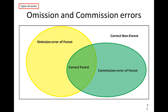From this example, we can draw principles for an arbitrary category J. Omission error of category J means the ground information shows category J, but the map does not. Commission error of category J means the map shows category J, but the ground information does not.